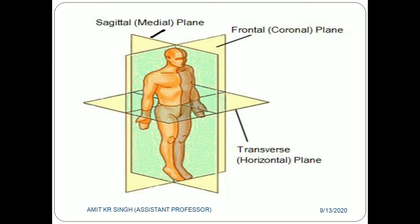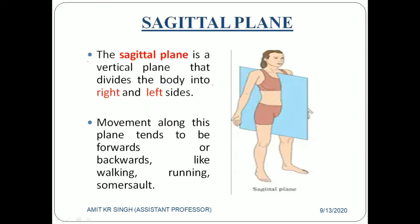In this diagram you can see various planes dividing the body into different parts. The sagittal plane, also known as the medial plane, cuts the body into right and left halves. The frontal or coronal plane, from the coronal suture, divides the body into anterior and posterior parts. The transverse or horizontal plane cuts the body from the center, dividing it into top and bottom halves.